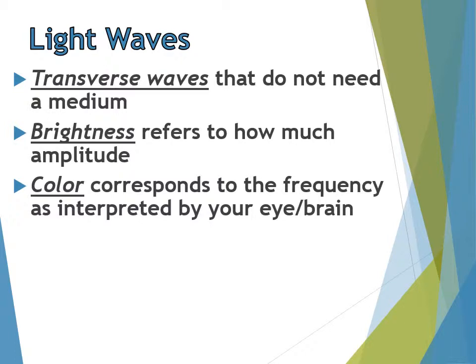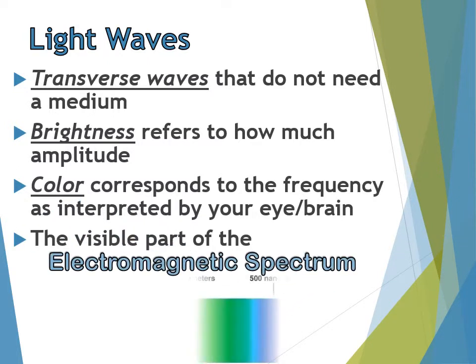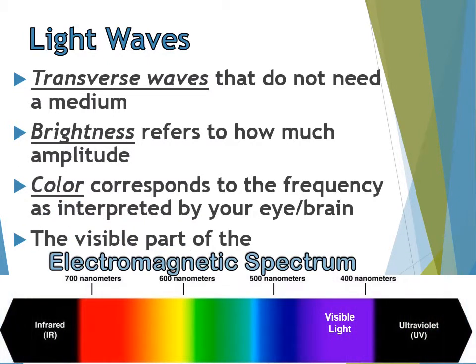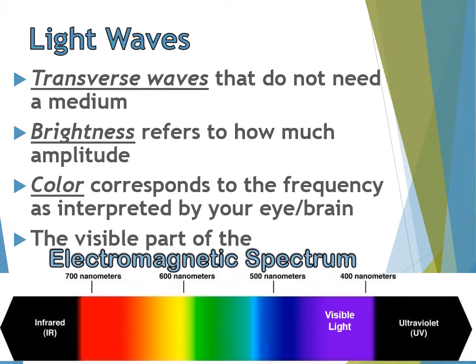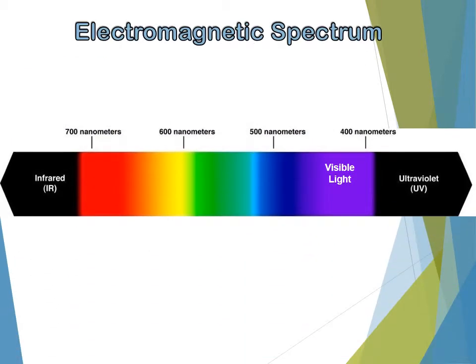The brightness refers to how much amplitude the light wave has. Just like loudness for sound refers to amplitude, that's where the energy is. Something unique about light waves is they actually have energy in their frequency as well. Color also corresponds to frequency, just like pitch corresponds to frequency for sound.